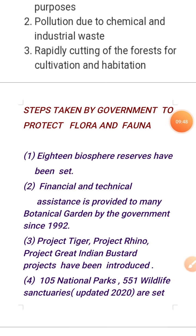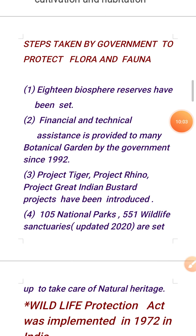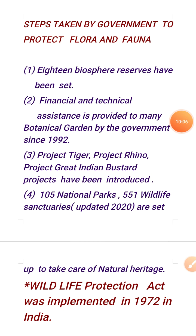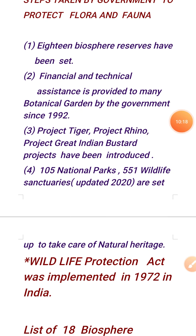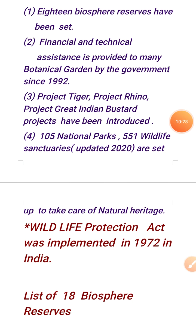We need to conserve flora and fauna, and our government has taken many steps. The government established 18 biosphere reserves for the development of different plant and animal species. From 1992, financial and technical support was provided for botanical gardens. The government also established different projects like Project Tiger and Project Rhinoceros.